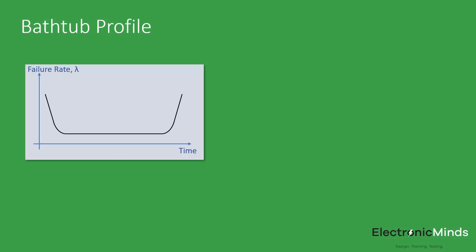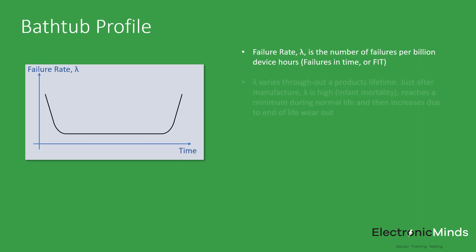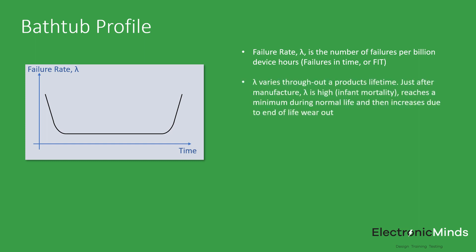Reliability prediction is based on statistical modelling of the failure rate of a product, i.e. how many units in a field population fail in a given time. This is modelled using the bathtub curve with the failure rate lambda plotted against time. And as you can see, lambda varies through a product lifetime.